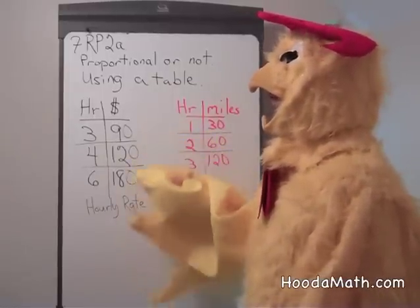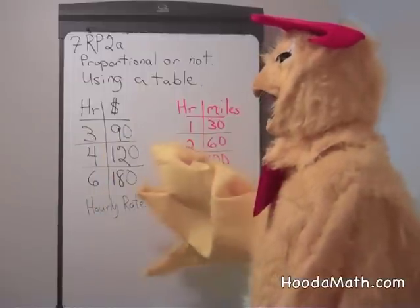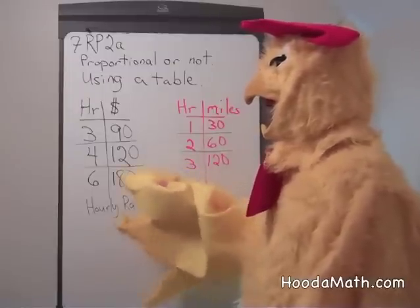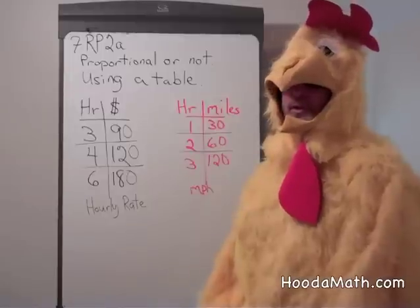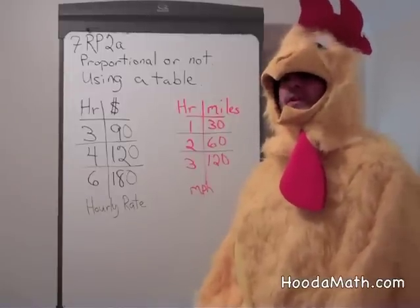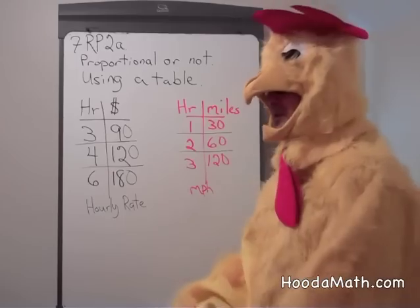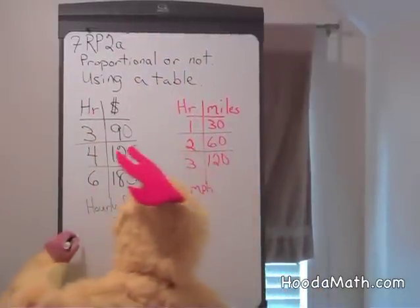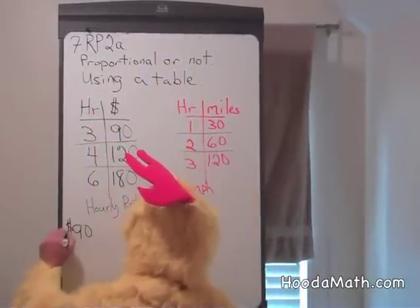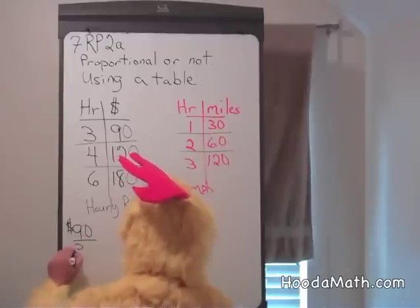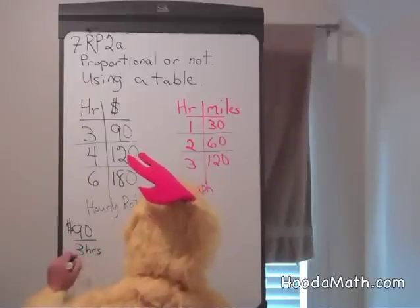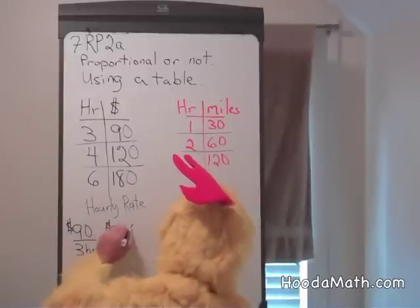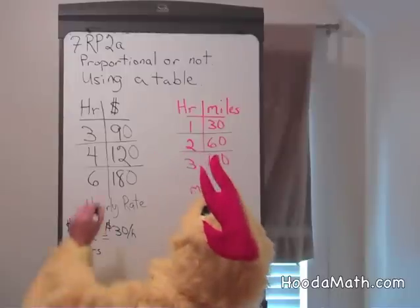He gets paid $90 for 3 hours of work, $120 for 4 hours of work, and $180 for 6 hours of work. Are these relationships proportional? One way we can figure it out is if we find the unit rate, or the rate per hour. $90 per 3 hours — if we divide, we find out Jim makes $30 per hour.